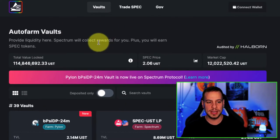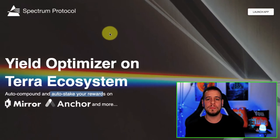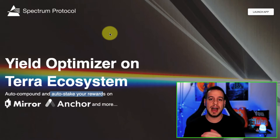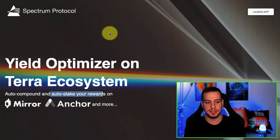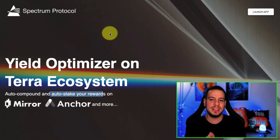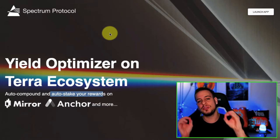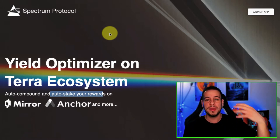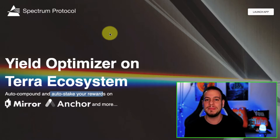This is basically very similar to Beefy Finance or Autofarm if you are familiar with those protocols on Binance Smart Chain or Ethereum, but with some additional features we will cover in this video. If you want to maximize your yields while using Anchor Protocol or Mirror Protocol, you have to watch this video till the end because Spectrum might be the right thing for you.